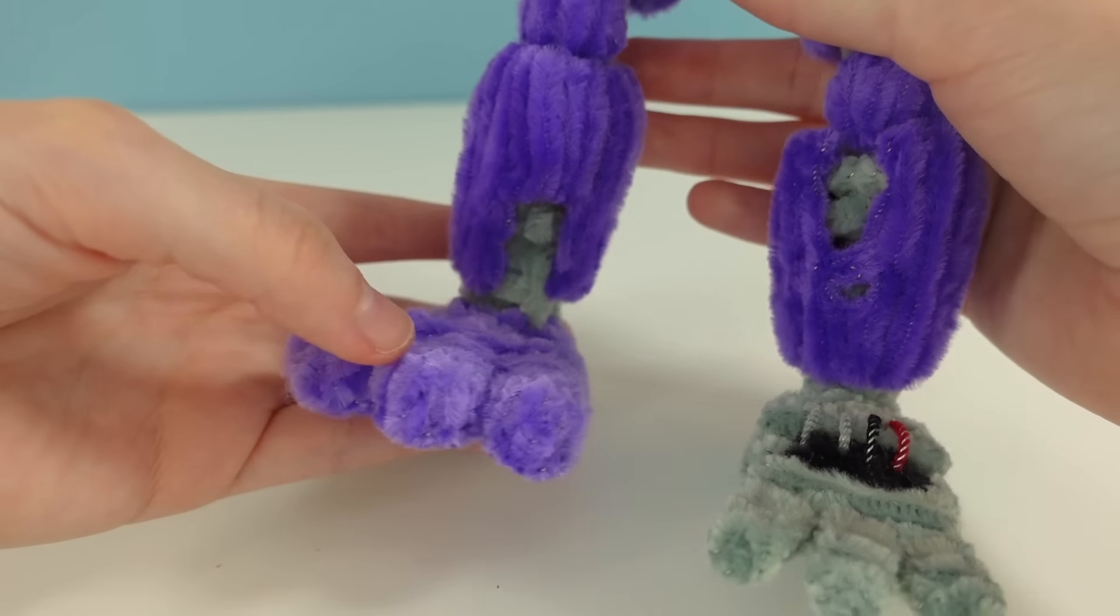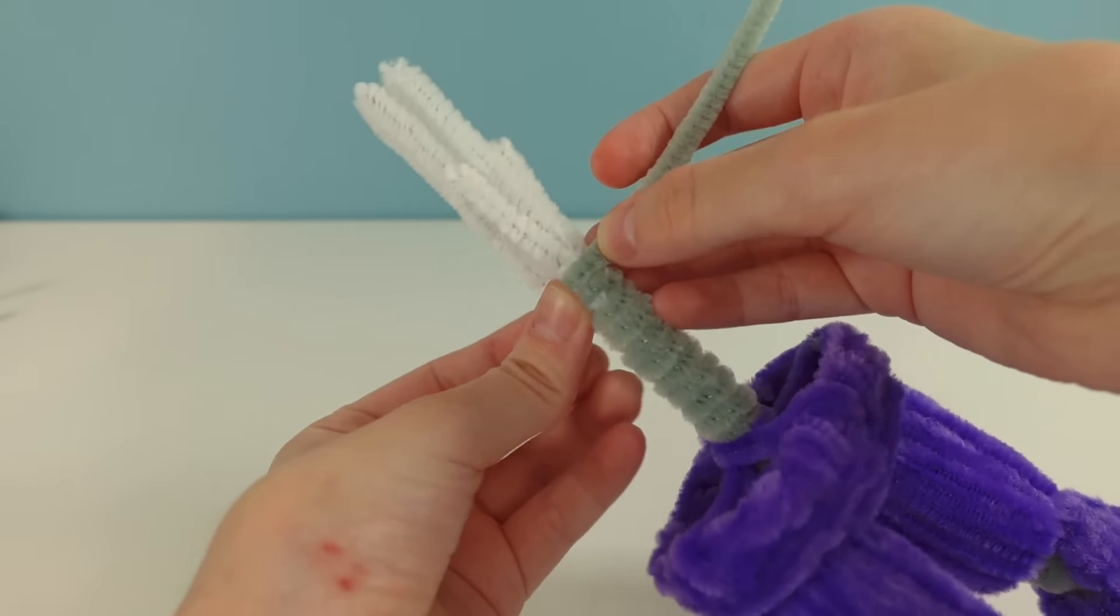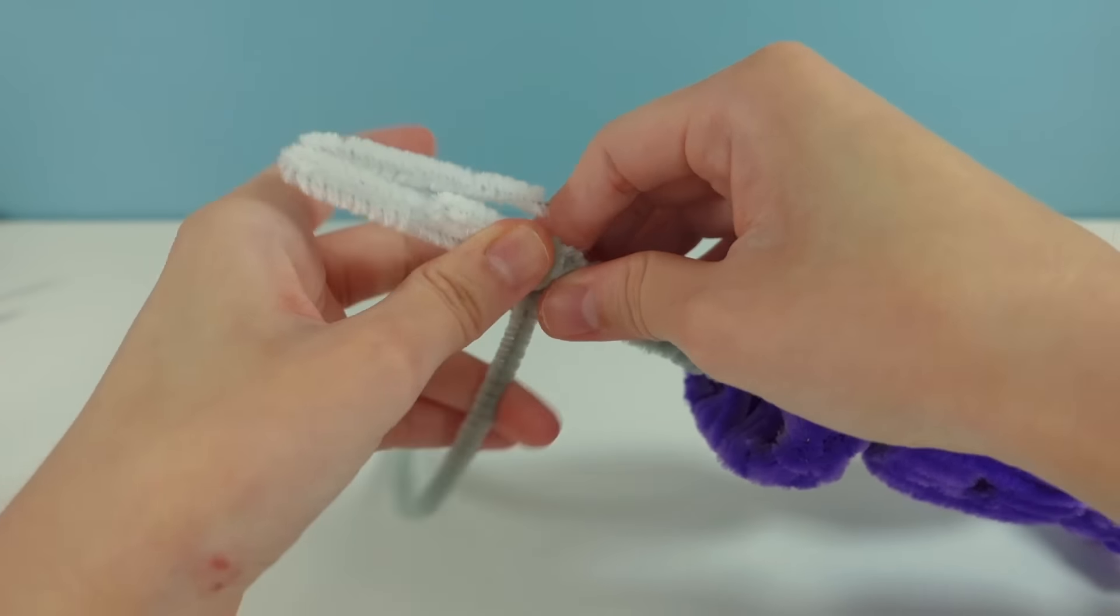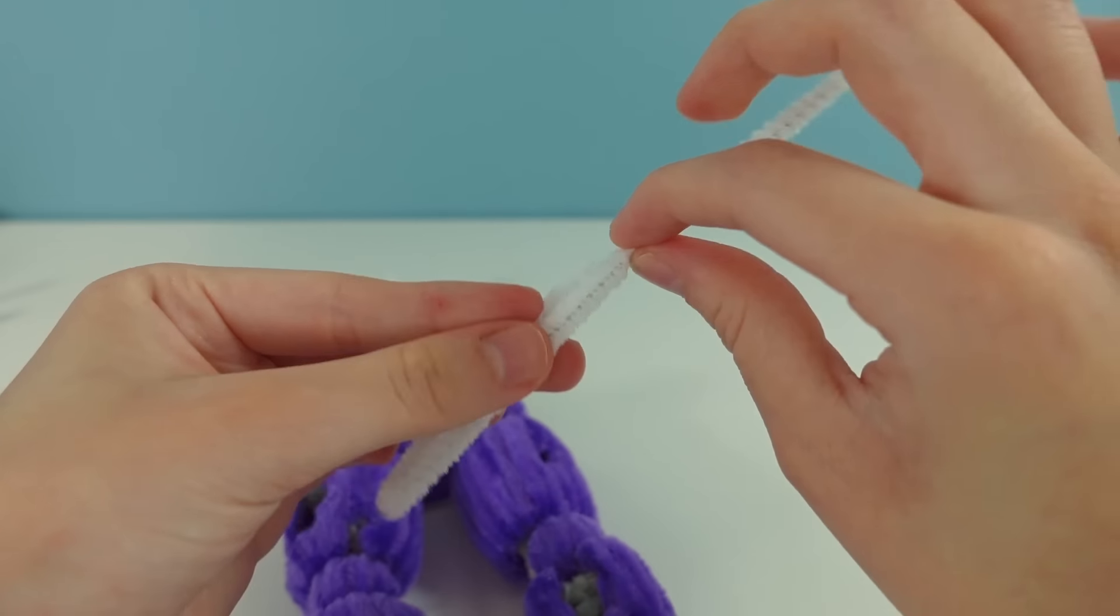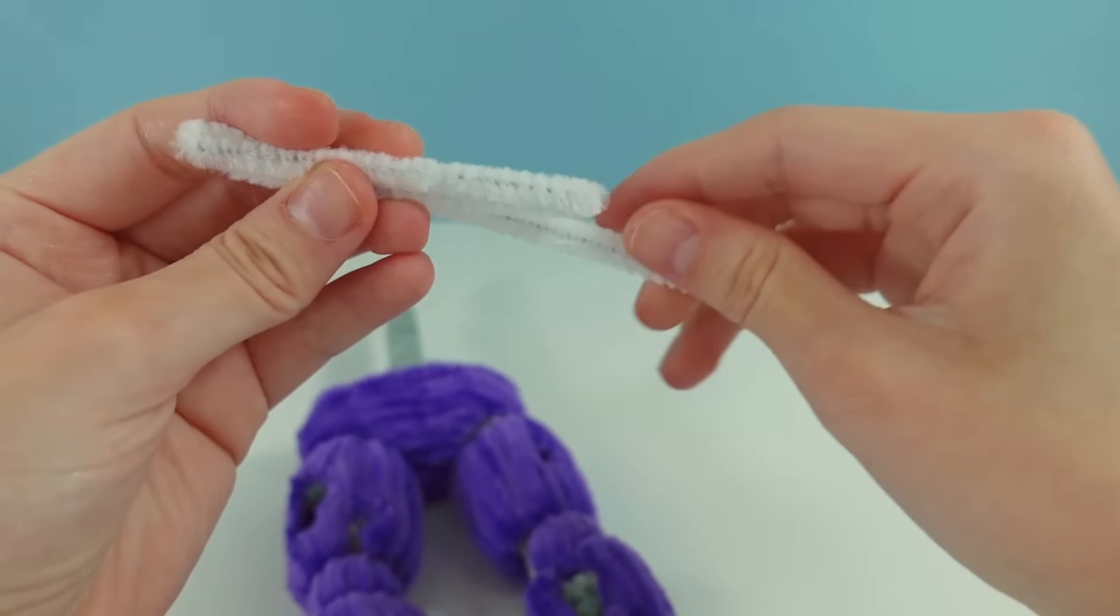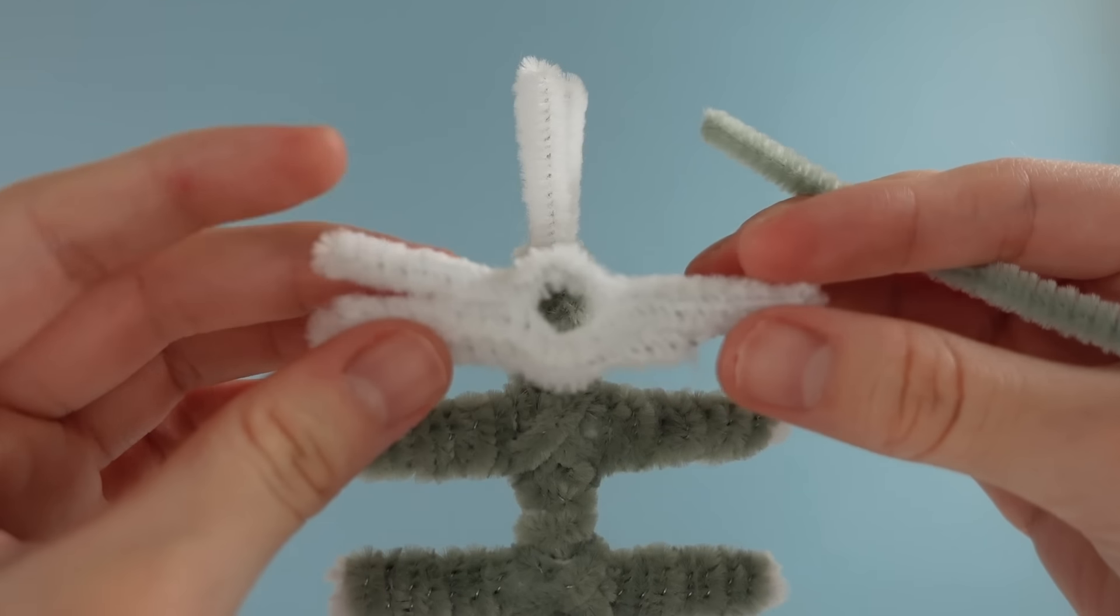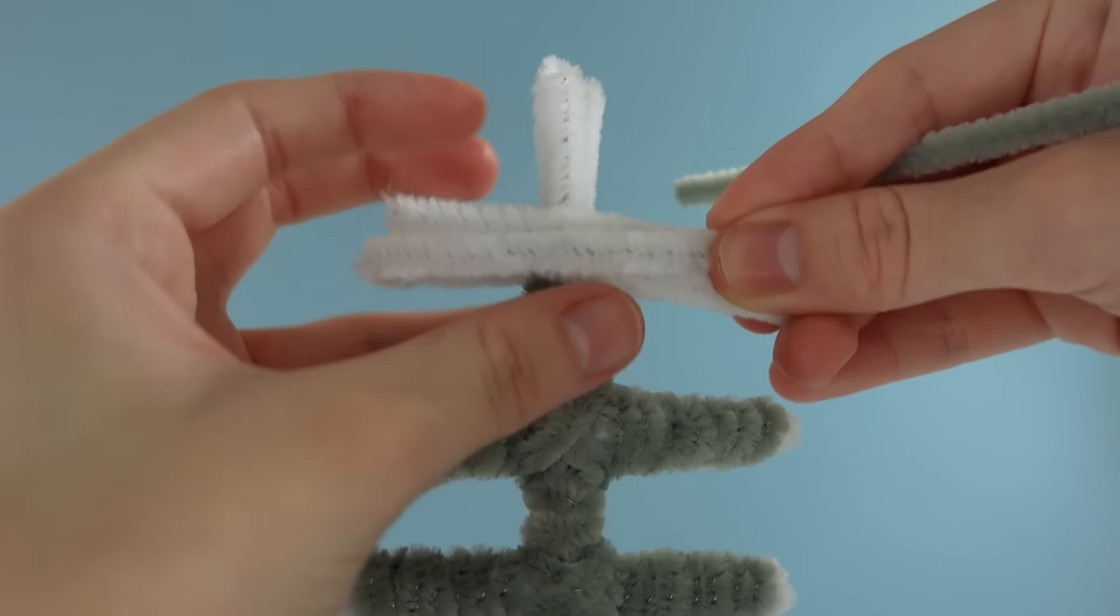Next, after completing the legs is the torso. First, I connected a few more pipe cleaners to the skeleton to make it longer. Then I attached some ribs just like an actual endoskeleton so it keeps the torso piece in place when I put it on.